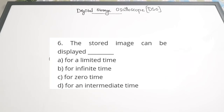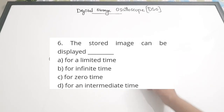Fourth question: In DSO, the stored waveform can be displayed - A - for a limited time, B - for infinite time, C - for zero time, D - for intermediate time. Since it is stored in memory, it can be displayed for infinite time. That is the main advantage of DSO. Since it is already present in memory, until the memory is cleared or removed it will be present. So for infinite time we can have the display. Correct answer is B - for infinite time.